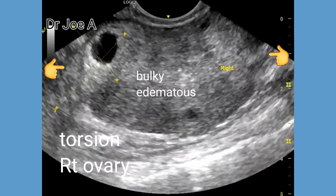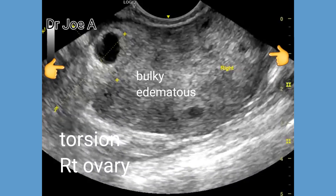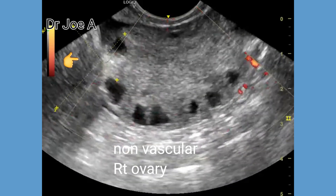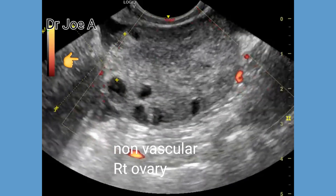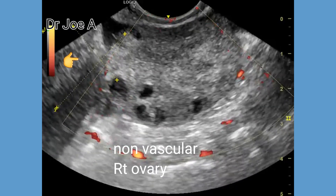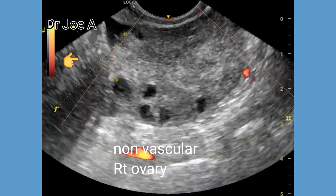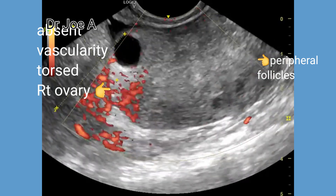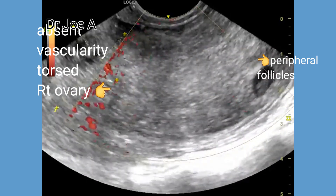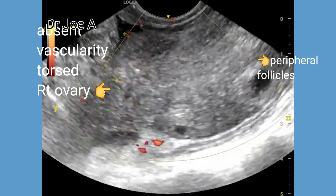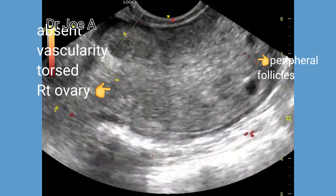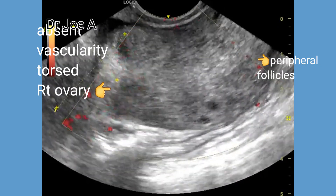All these findings suggest a diagnosis of torsion of the right ovary. Color and power Doppler ultrasound also confirmed absolute lack of vascularity in the right ovary, further confirming torsion with absence of vascularity.